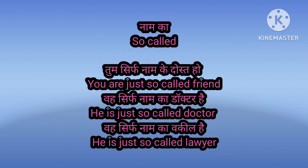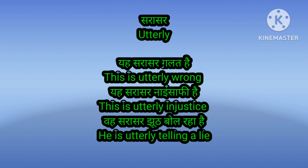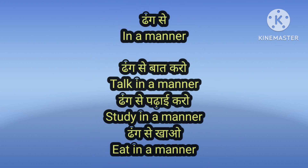Next is 'utterly'. This is utterly wrong. This is utterly injustice. He is utterly telling a lie. For 'sarasar' you have to use 'utterly'. So this way you can make all sentences — that will be the same in all sentences.